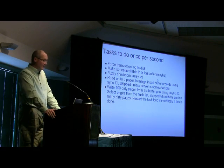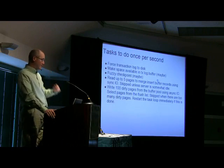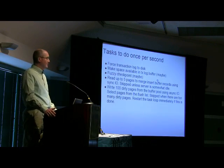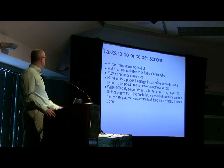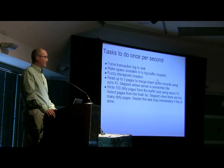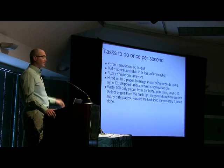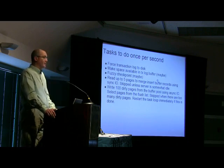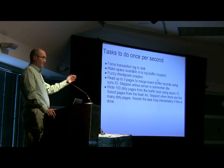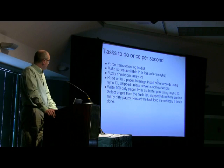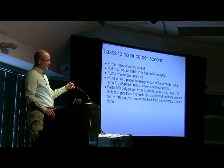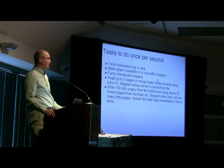In the once-per-second loop, it will read up to 5 pages to merge insert buffer records — that's 5 IOPS per second, not enough on a busy server. It will also try to write 100 dirty pages from the buffer pool using async IO. The insert buffer IO is done using synchronous IO, meaning the loop waits for that operation to complete. The dirty page writes to the database file are done using async IO, so it just issues the requests and continues. Pages are selected from a flush list, which maintains pages in order of when the page was made dirty.